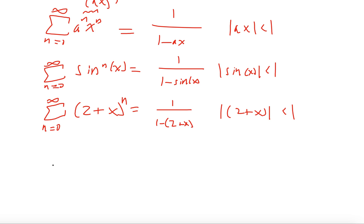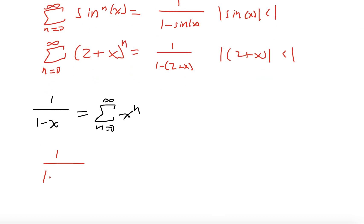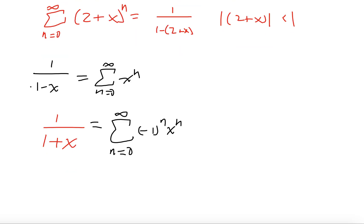Starting with the hero of our story, the geometric series: 1 over 1 minus x equals the sum from n equals 0 to infinity of x^n. We plug in minus x instead of x, giving us 1 over 1 minus (minus x), which is 1 over 1 plus x, equal to the sum from n equals 0 to infinity of (minus x)^n, which splits into (minus 1)^n times x^n — an alternating geometric series.